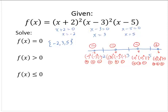Now I can solve the related inequalities. Where is the function greater than 0? The function is greater than 0 only on the last interval, where we ended up with a positive value — so it's greater than 0 on the interval 5 to infinity.